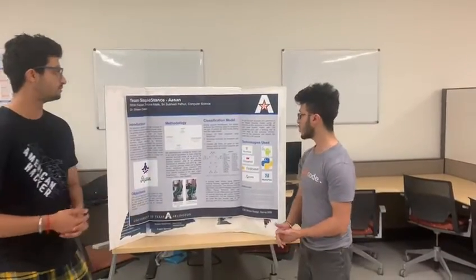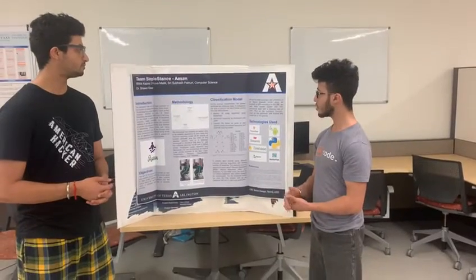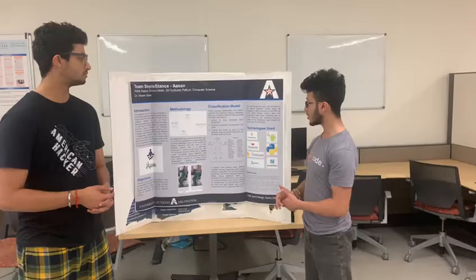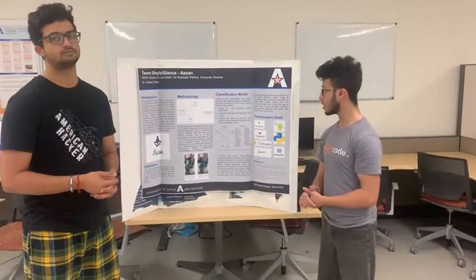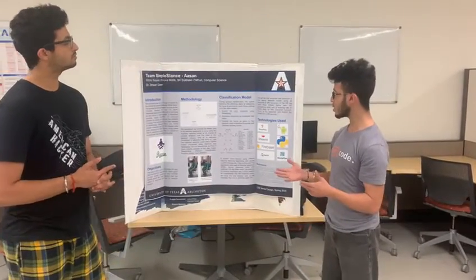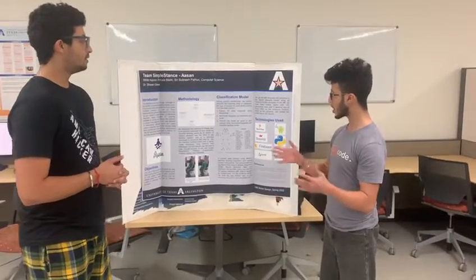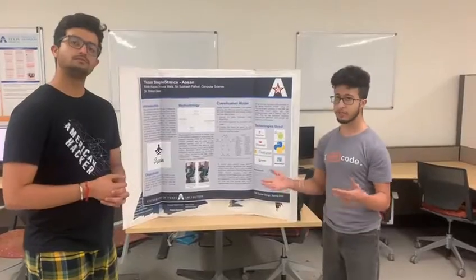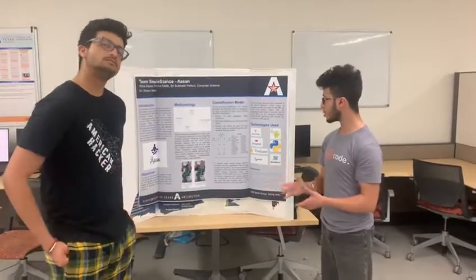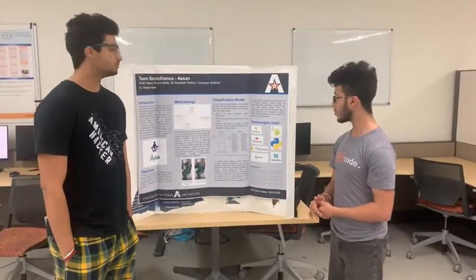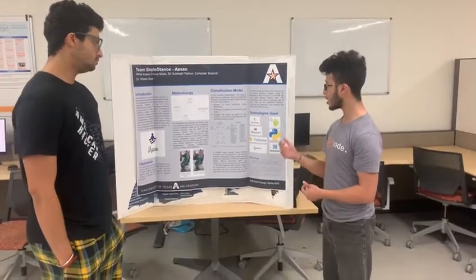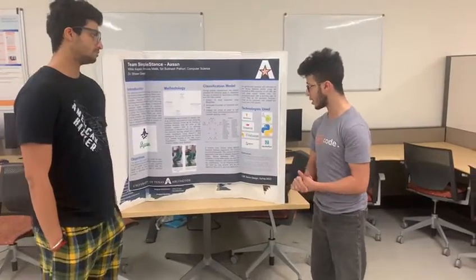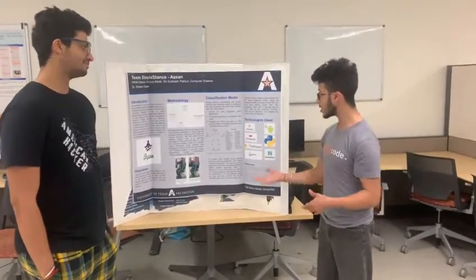Thank you Dhruva. For posture classification, we use MediaPipe to extract 33 key points using the BlazePose model. Next, we normalize these key points to ensure consistency through translation and scale. Finally, we classify each frame as good or bad posture using these normalized key points, passing them on to our machine learning model which classifies it as good or bad.